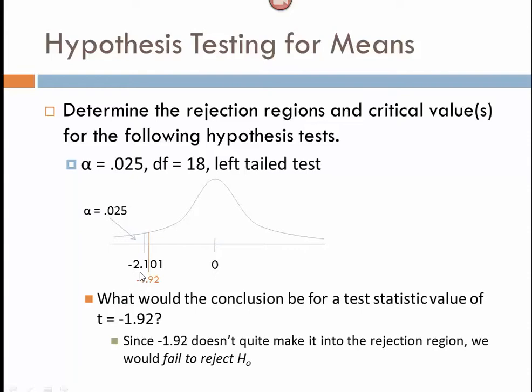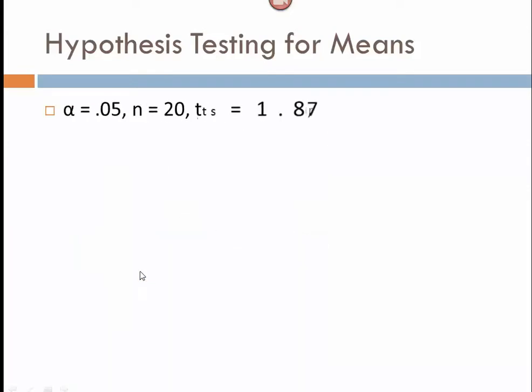Now, for the next few problems, I want you to draw a picture representing things and use your pause button here. So, given an alpha of 0.05, my sample size to be 20, and my test statistic result to be 1.87. So, this is from my sample. Determine first what the critical value is in this case. Hit pause for a minute while you figure that out.